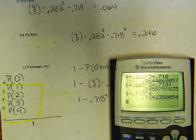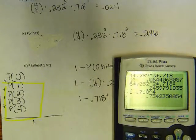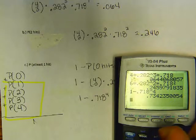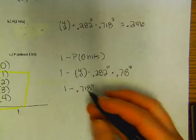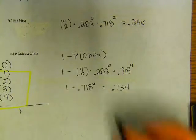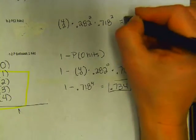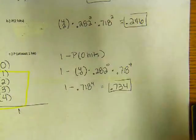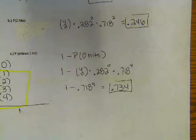So the probability that he gets at least one hit in the next game then would be .734. Alright, cool. So binomial probability.